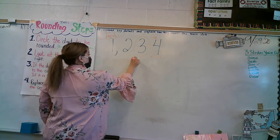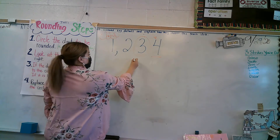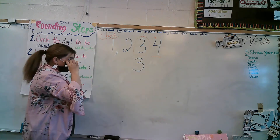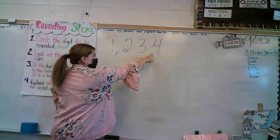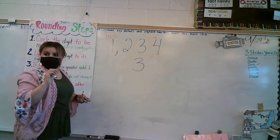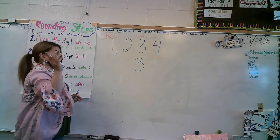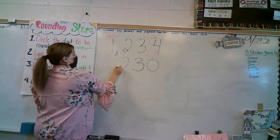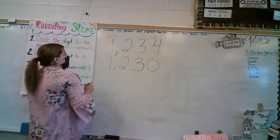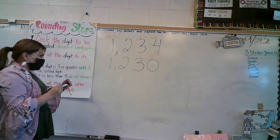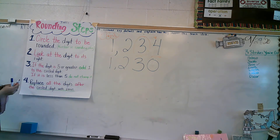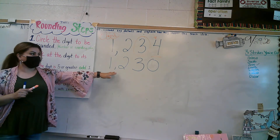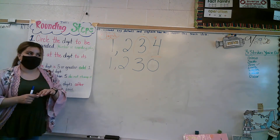So this stays a three. What happens to this number though? Once I've rounded, what do those numbers turn into? Zeroes. And these ones I just bring down. So 1,234 rounded to the nearest ten is 1,230.